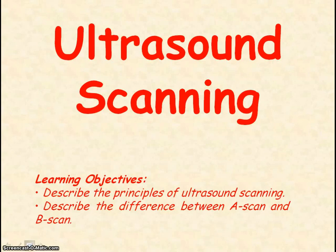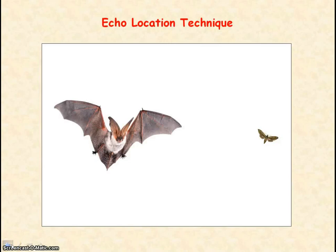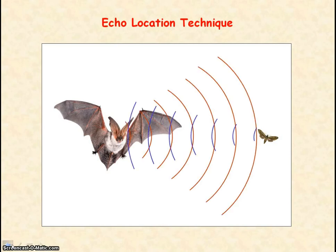We're going to be looking at ultrasound scanning. Ultrasound scanning relies on the echolocation technique, and this technique is used by bats to navigate. They send out ultrasound which is then reflected when it hits an object, so the reflected sound is called the echo, and the time taken for the bat to receive the echo is an indicator of how far the object is.